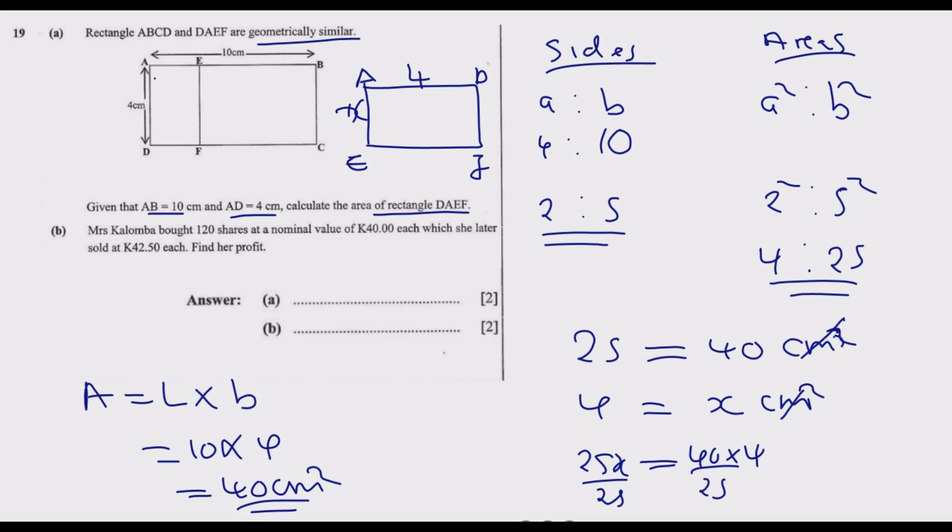To find x, we divide by 25: x equals 160 divided by 25. 5 into 160 is 32, and 32 divided by 5 is 6.4. So we have 6.4 centimeters squared as our answer. That's the answer for part A.